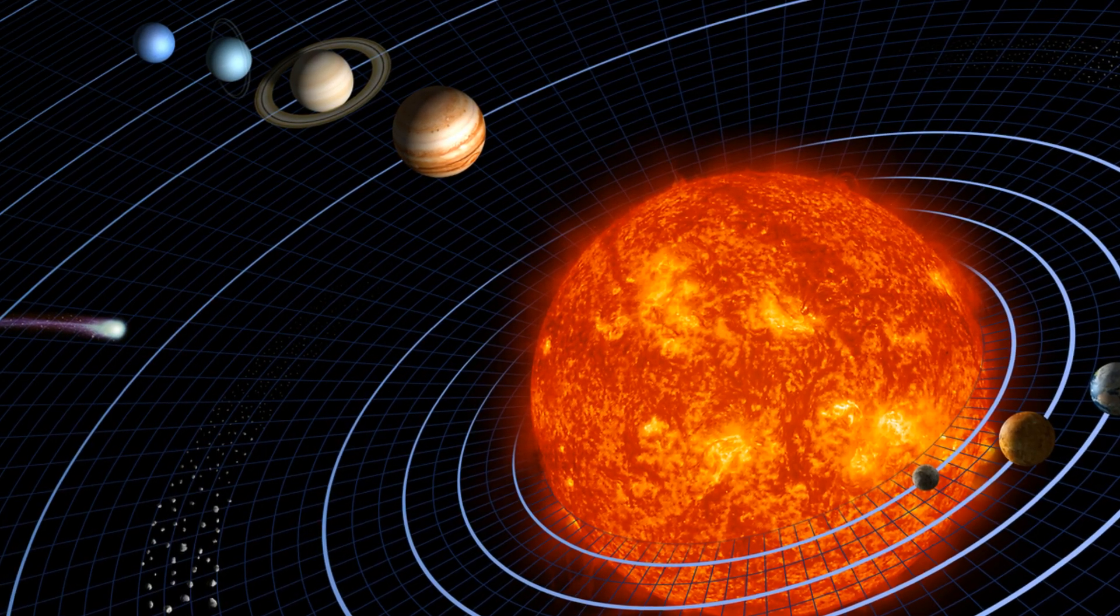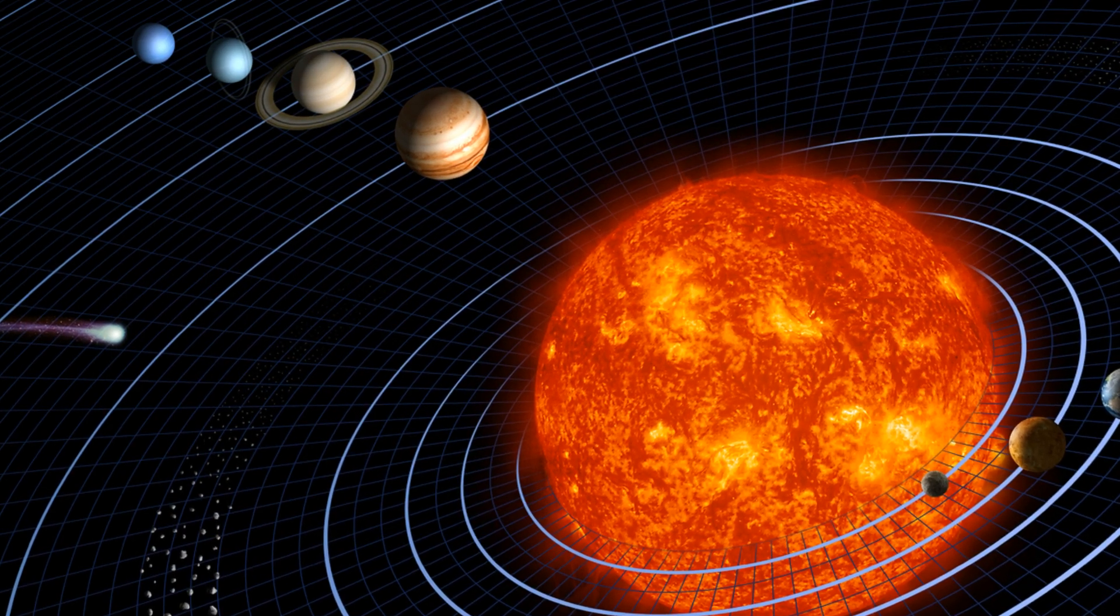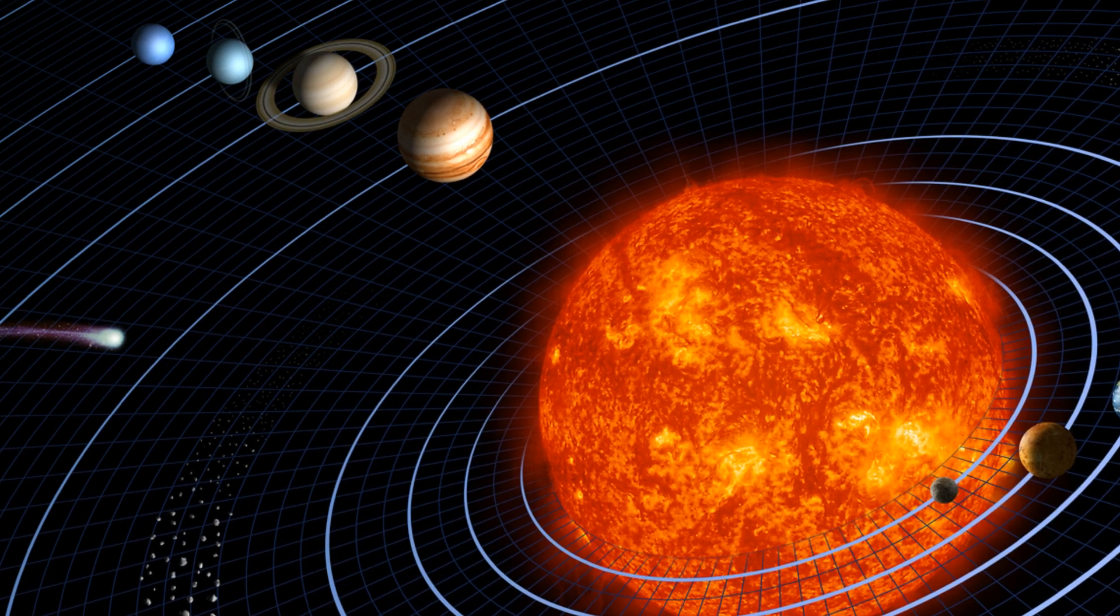Neptune is 3.5 miles away, Jupiter is 0.57 miles, Saturn is 1.1 mile and Uranus 2.1 miles.